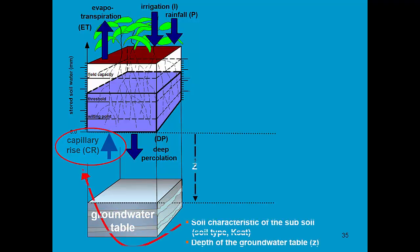It is calculated by considering soil characteristics of the subsoil. What is the soil type? Is that a sandy soil, more loamy, clay soil? And what is the Ksat value?